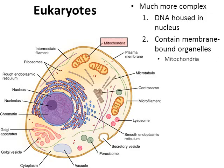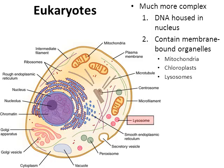In the picture I've highlighted the mitochondria. We're not going to go through all of these cell parts, but the mitochondria is an example of a membrane-bound organelle — it makes energy for the cell. Another example you may have heard of is the chloroplast, which is what plant cells have to do photosynthesis. This is an animal cell in the diagram so there are no chloroplasts, but the chloroplast is also a membrane-bound organelle.